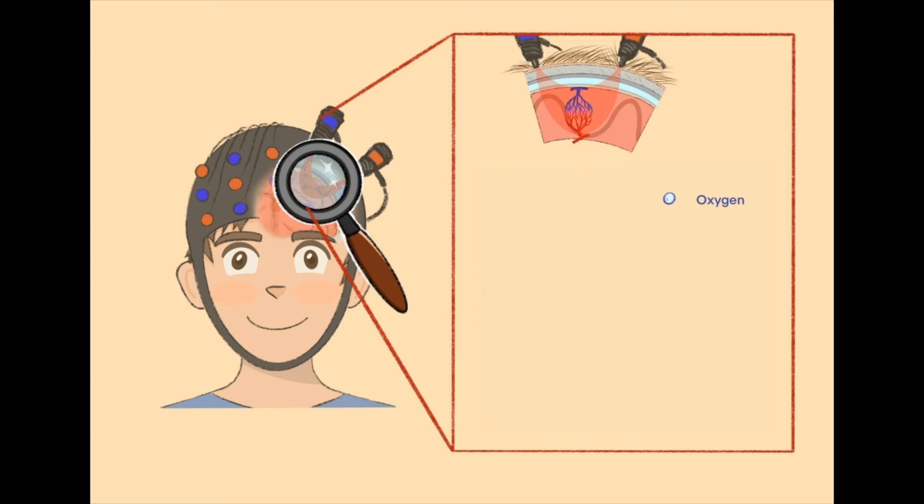Oxygen is carried to brain areas by a protein in your blood that is called hemoglobin. Hemoglobin is what makes your blood red. In order for oxygen to reach the active brain region quickly, blood vessels become wider. The blood flow increases. Lots of fresh blood with oxygenated hemoglobin arrives at the active brain regions.